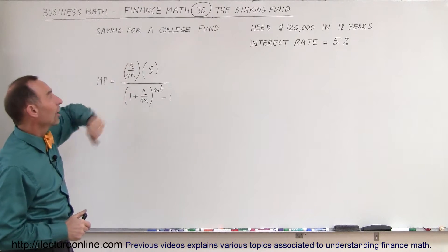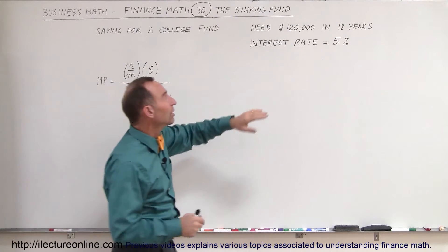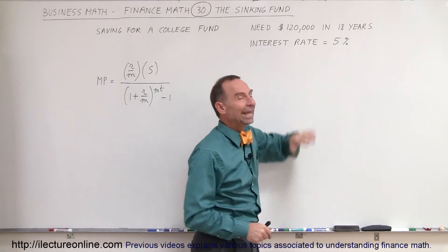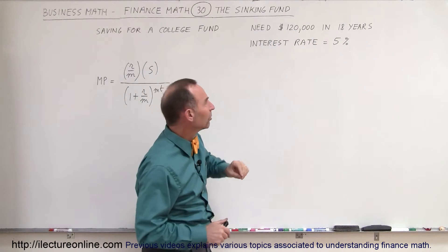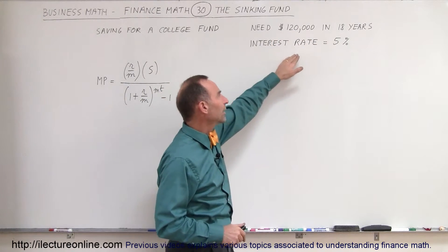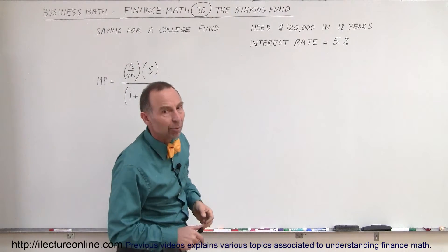So let's say you want to save for a college fund and you predict that you're going to need $120,000 18 years from now to pay for college and you know that you can get an interest rate of about 5% on your investment.